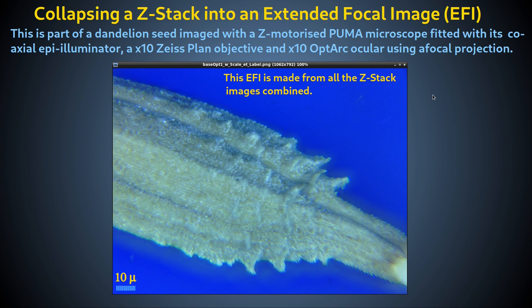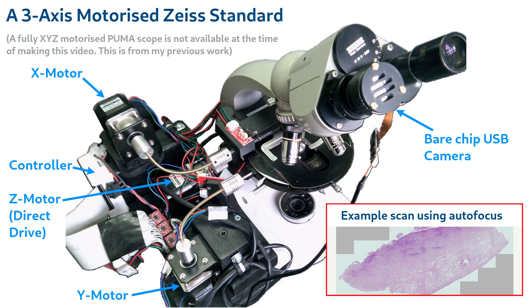A computer-controlled Z-motor, when coupled with automated image acquisition, provides the means for implementing autofocus. This is essential if you want to use the scope to automatically scan a large specimen area after motorizing the X and Y axes as well.